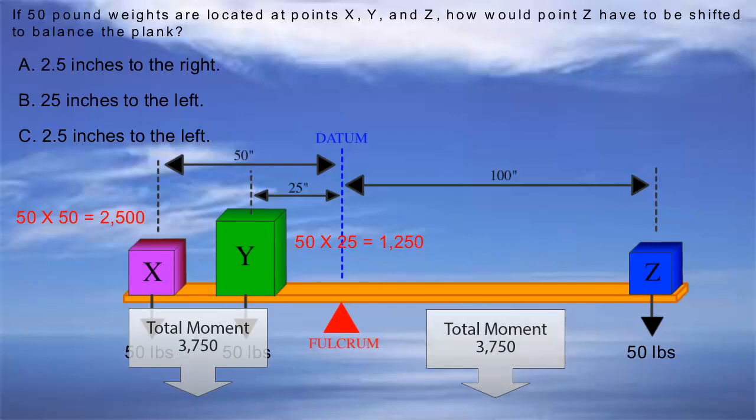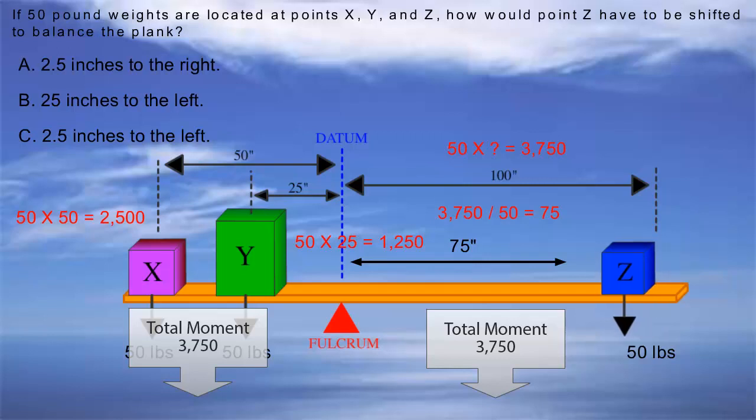All we need to do is find out what number multiplied by 50, the weight on the right side, gives us 3,750. Let's divide 3,750 by 50, and there you have it, 75 inches is the distance Z needs to be located from the datum line. Since it was originally at 100 inches, it needs to be moved left 25 inches. So B, 25 inches, is the correct answer.